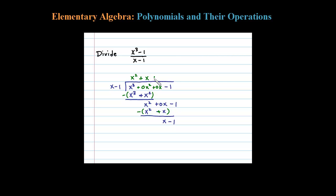Okay, and then for the last term, what times x will give me x? That should be easy to see that it's 1. 1 times x is x, and then 1 times negative 1 is minus 1.